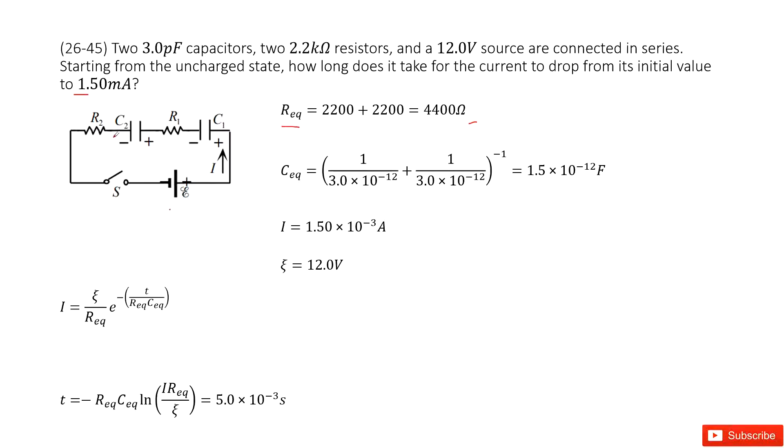You can see in these circuits we have two resistors, two capacitors, and a battery. We need to find how long does it take for the current to drop from the initial to 1.5 Amps.